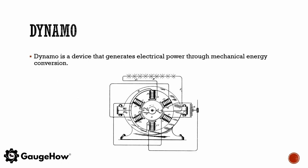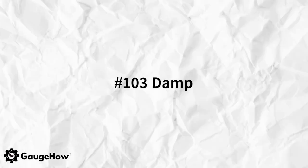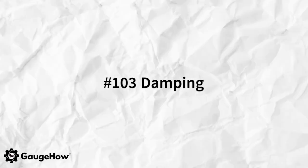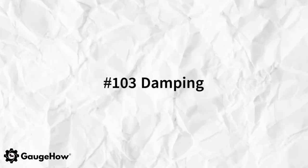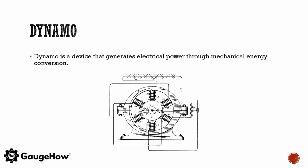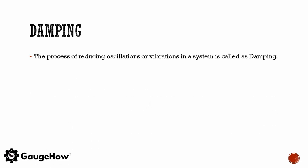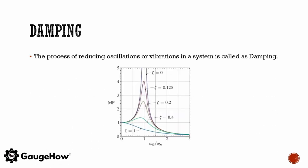A dynamo is a device that generates electrical power through mechanical energy conversion. The process of reducing oscillation or vibration in a system is called damping.